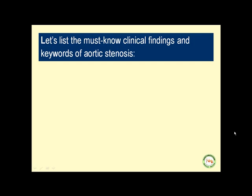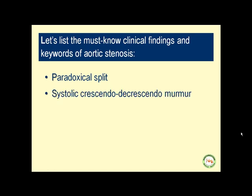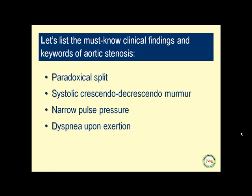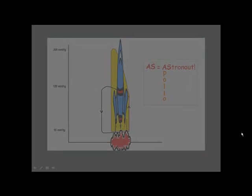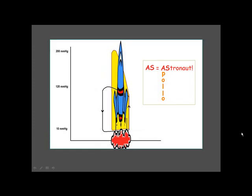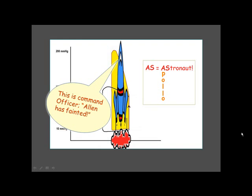The must-know clinical findings and keywords related to aortic stenosis are: paradoxical split, systolic crescendo-decrescendo murmur, narrow pulse pressure, dyspnea upon exertion, and syncope. A mnemonic: faintness goes with AS, AS goes with astronaut, astronaut reminds you of the rocket, and that rocket reminds you of the shape of the pressure-volume loop.